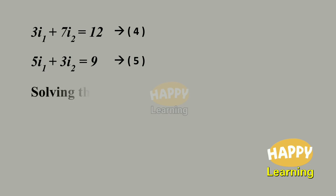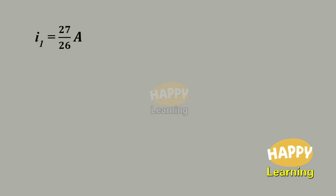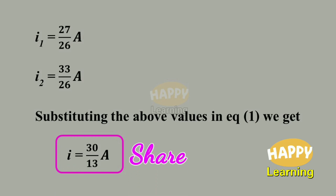Solving equations 4 and 5, we get I1 equals 27/26 amperes and I2 equals 33/26 amperes. Substituting these values into equation 1, we get I equals 30/13 amperes. That is, the current drawn from the 12-volt battery is 30/13 amperes.